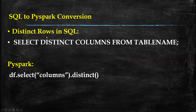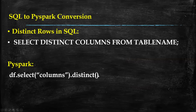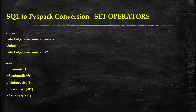Today we are going to cover how to select distinct rows in SQL and how to write the same thing with PySpark. In SQL it is very straightforward: SELECT DISTINCT columns FROM table_name. When it comes to PySpark, you select the data — whatever columns you need — and then on top of that you use the distinct() method.